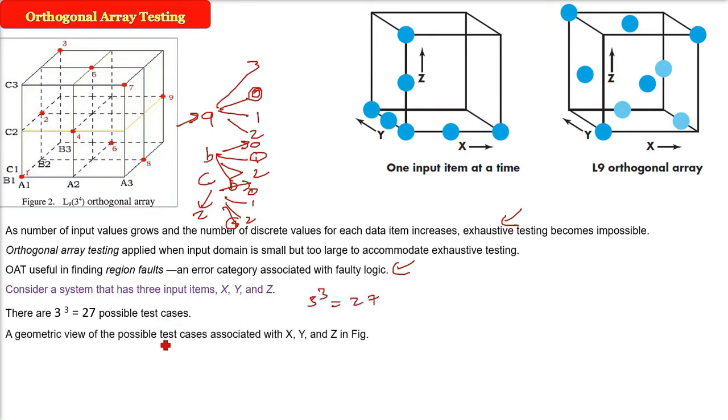What is the geometric view of the possible test cases? Here you have x, y, and z represented with the x, y, z axis, and these round points are the possible test cases.